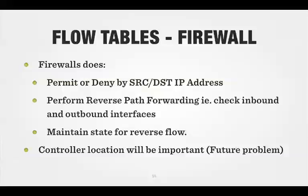What about flow tables acting as a firewall? A firewall is essentially a router that either permits or denies via source or destination IP addresses. Unlike a router, which permits by destination IP address as its standard condition, a firewall does a permit or deny — usually a deny — by source and destination IP address. It also performs reverse path forwarding checks and maintains state for the reverse flow, so that when the destination initiates a return session, the firewall has an algorithm to handle that stateful flow.